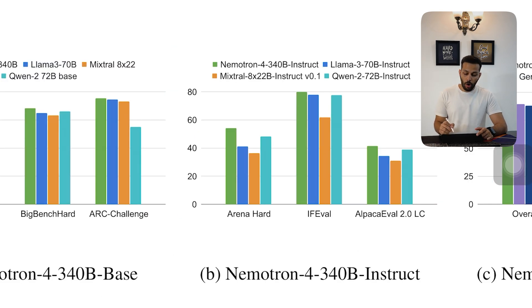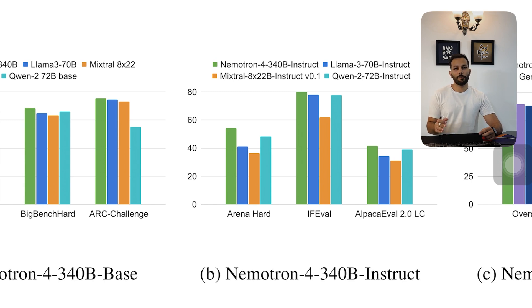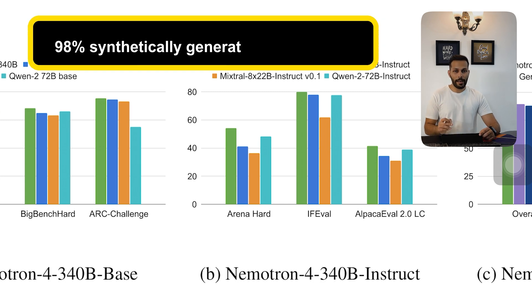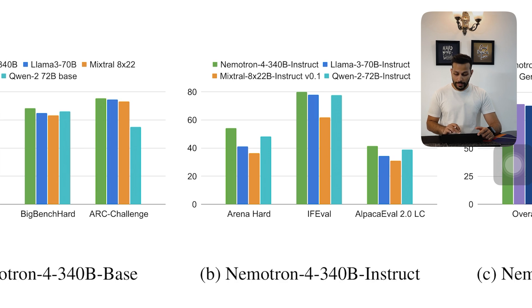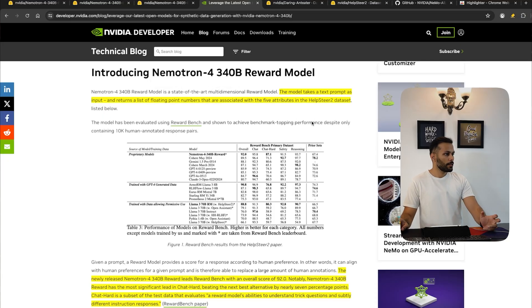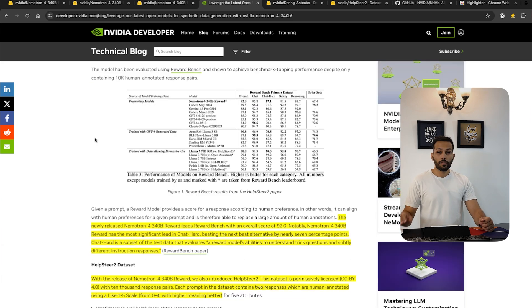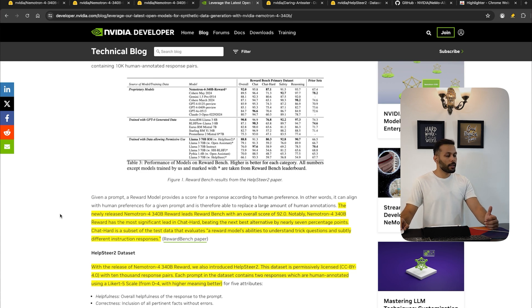The Instruct model also outperforms these open-source models. While this may not be as impressive given Nemotron 4's large size of 340 billion parameters compared to smaller 70 billion parameter models, what is amazing is that the model was trained with 98% synthetically generated training data. Even more impressive, the Nemotron 4 reward model outperforms proprietary models such as Gemini 1.5 Pro and GPT-4o. The reward model leads the reward benchmark with an overall score of 92, with a significant lead in 'chat hard' examples — a subset that evaluates a reward model's ability to handle trick questions and subtly different instructions.